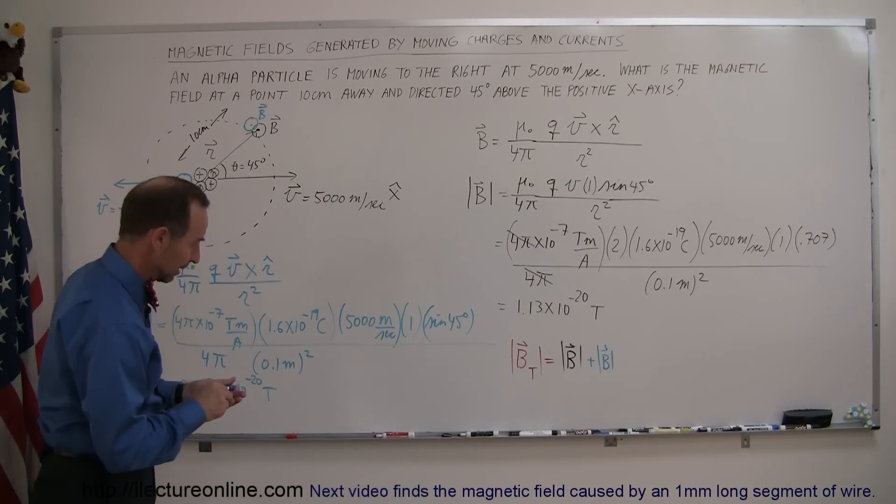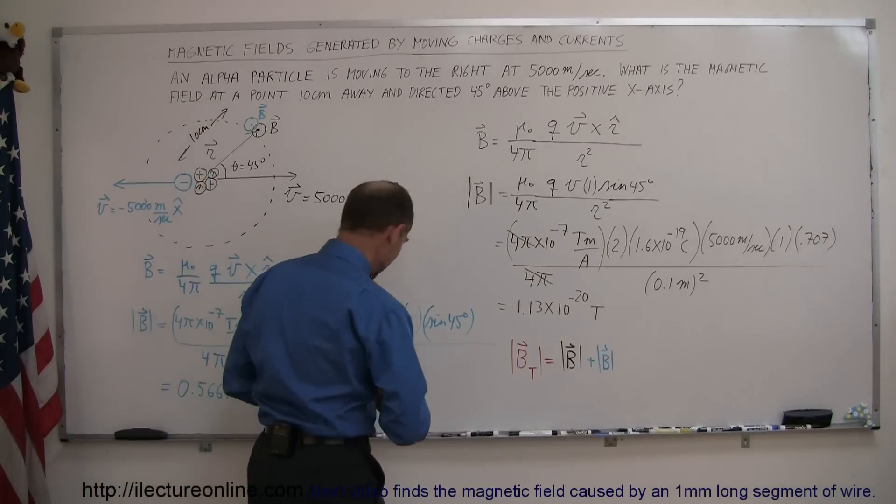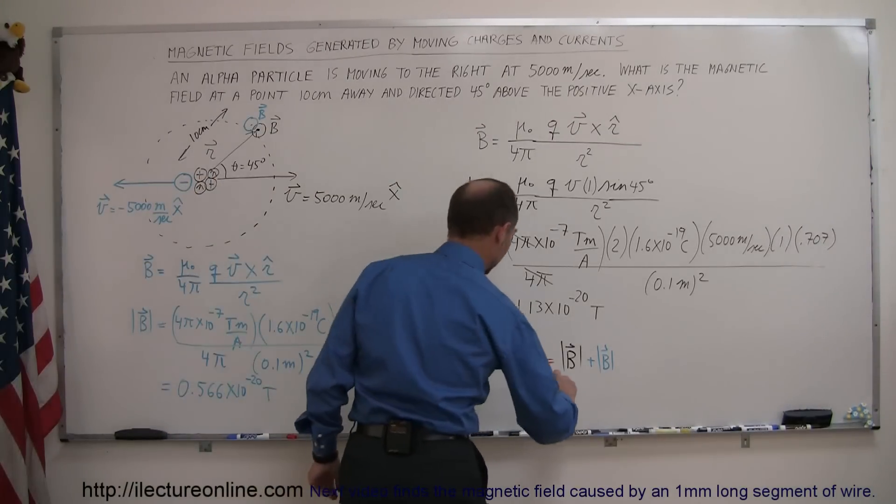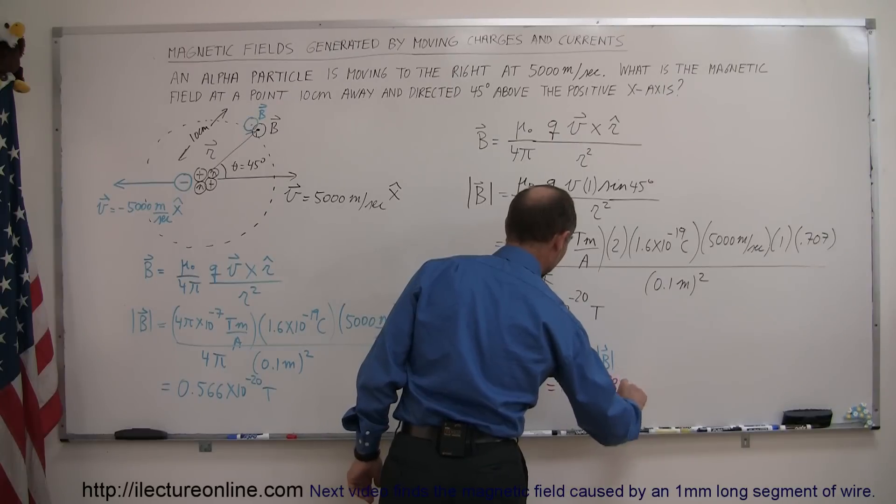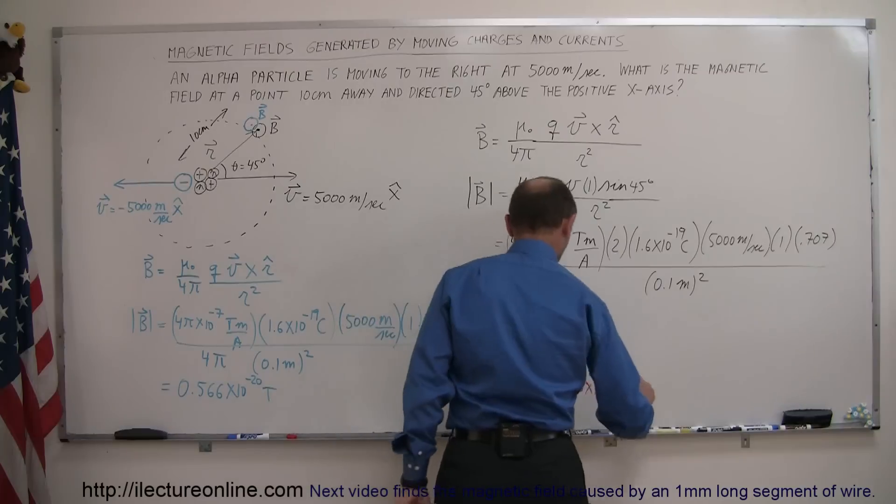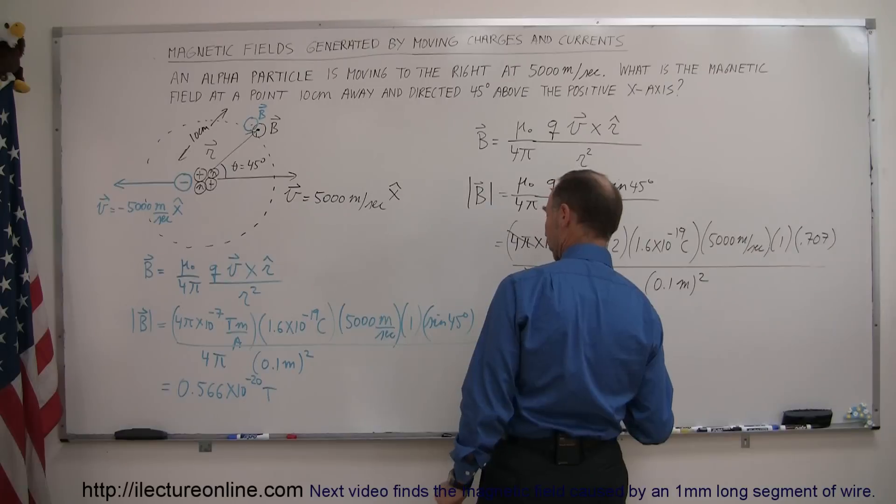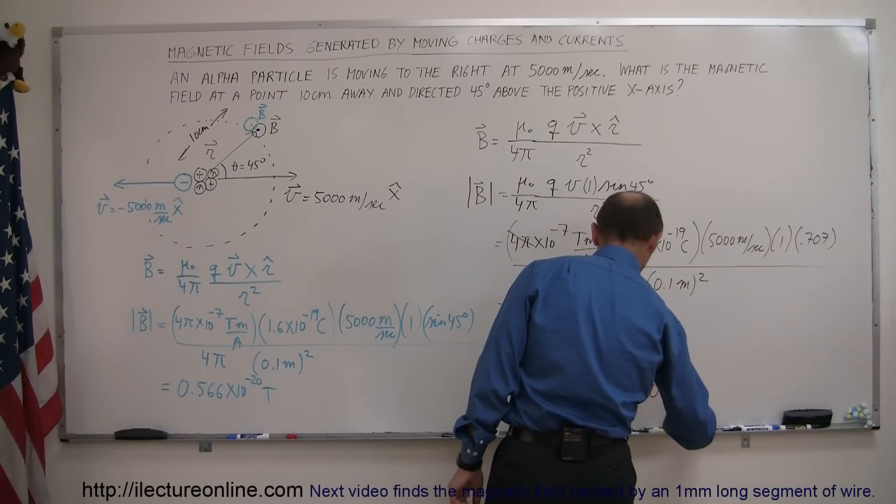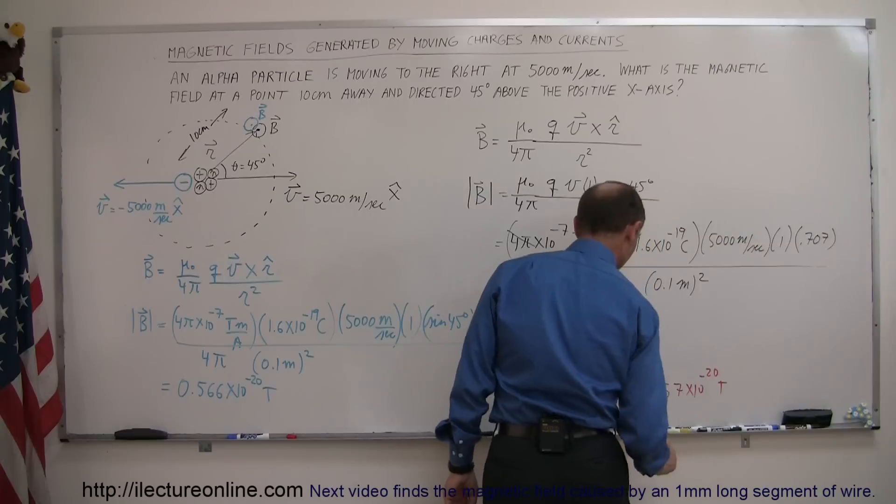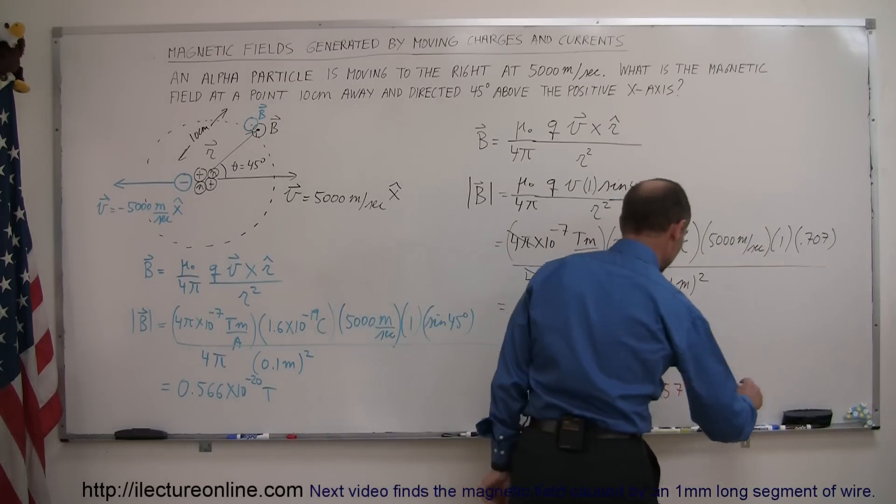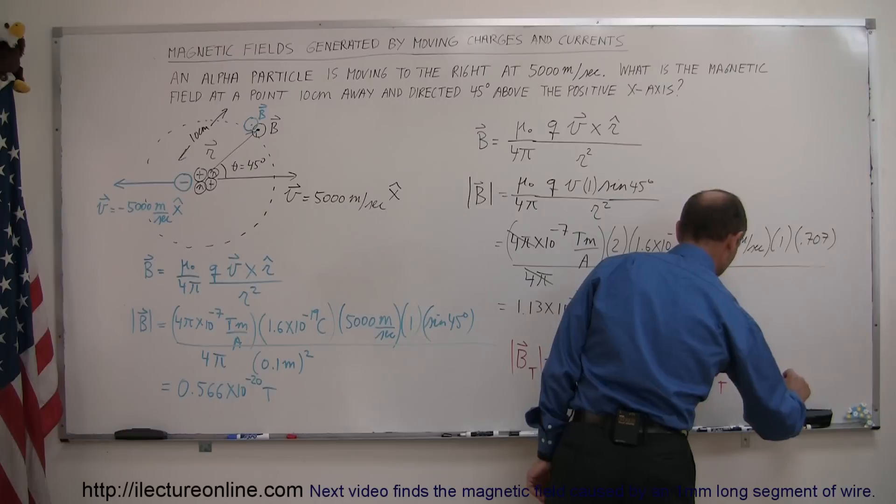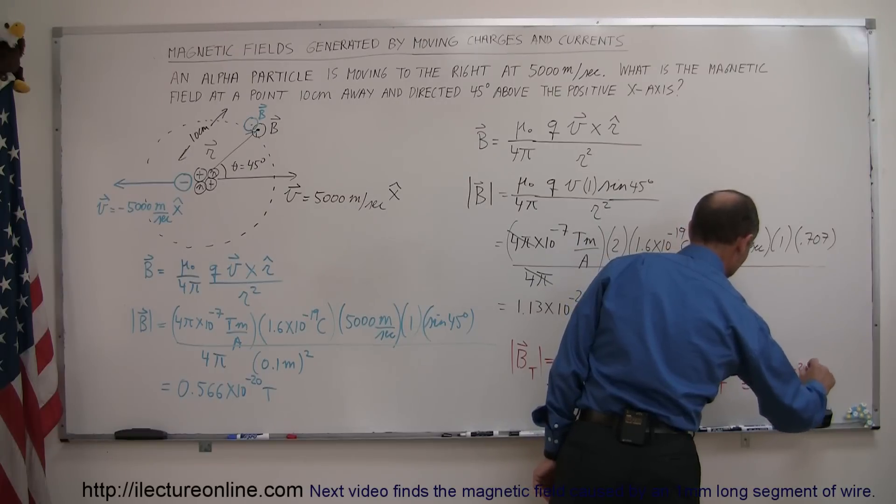And the result then is, this is equal to 1.13 times 10 to the minus 20 Teslas, plus, let's round it off to two significant figures, 0.57 times 10 to the minus 20 Teslas, so we add the two together, that gives us 1.70 times 10 to the minus 20 Teslas.